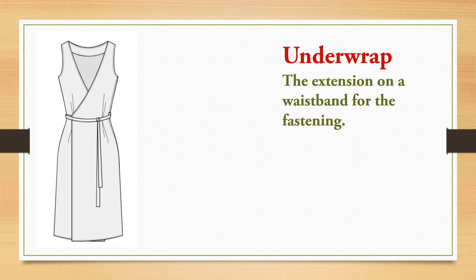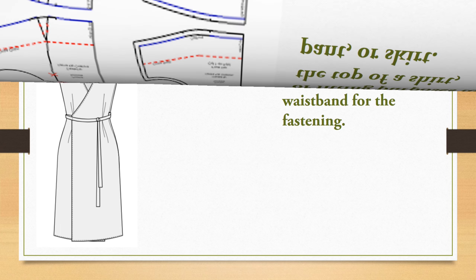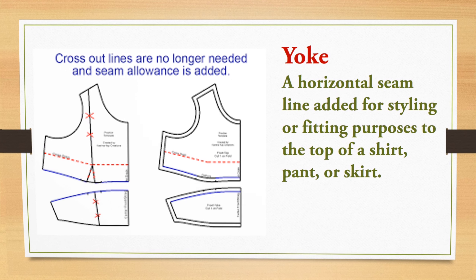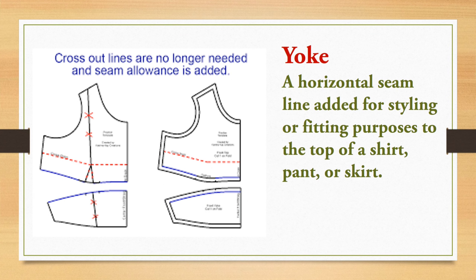Under wrap is the extension on the waistband for fastening. In a double-breasted garment, the extended part of the front or the flap is called the under wrap.